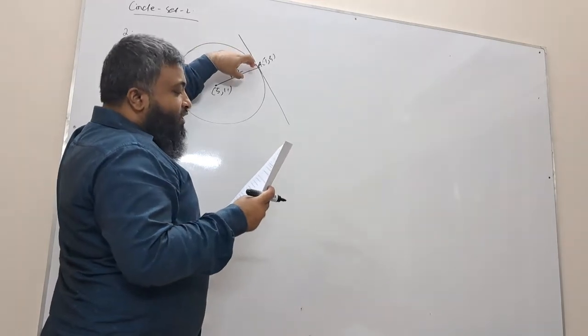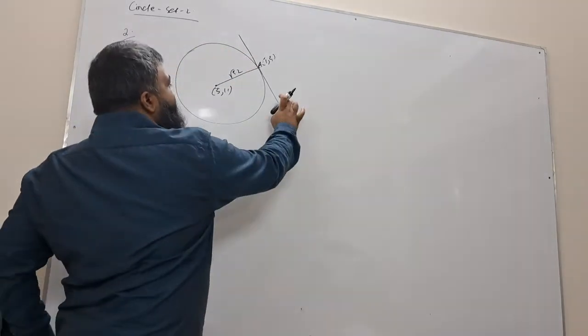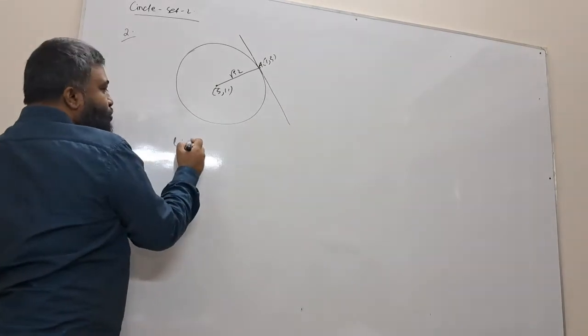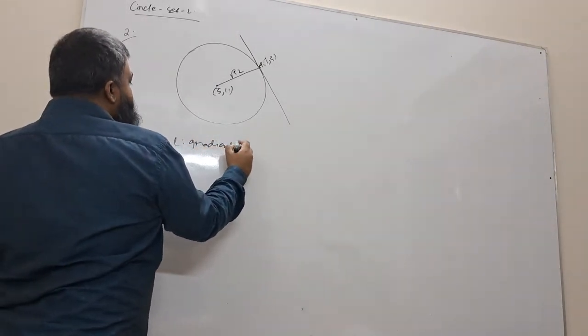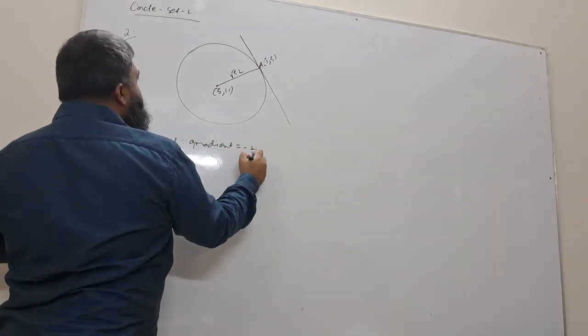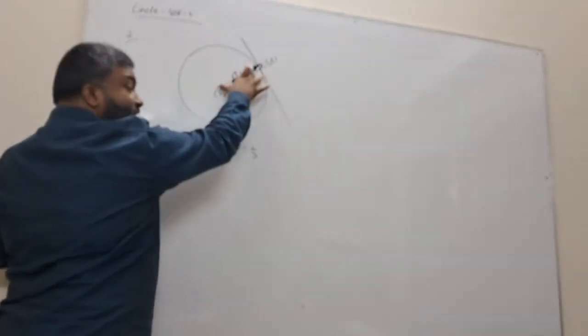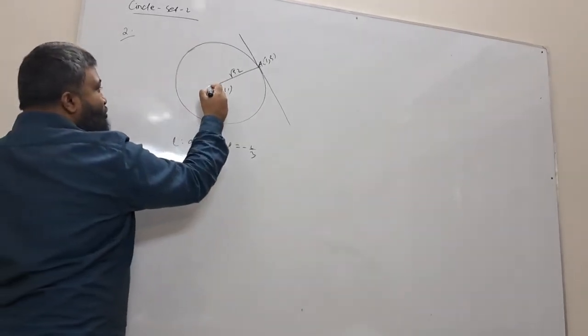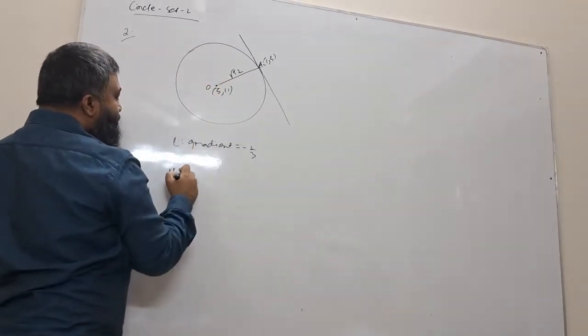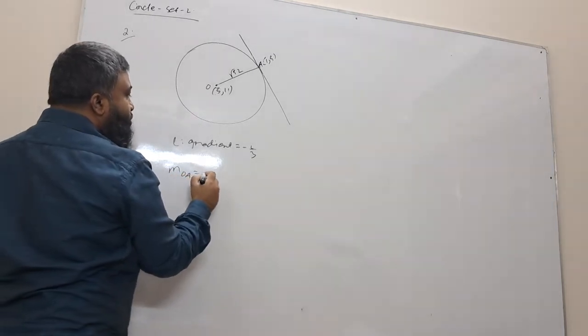What is the answer? Minus 2 by 3. So, this is a gradient. This point A means that O is considered. It is a gradient of OA. The gradient of OA, what is it?